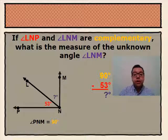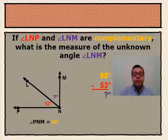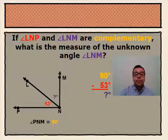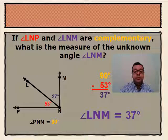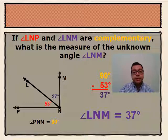So we have our 90 degrees, and we're going to subtract angle LNP, 53 degrees, to get our angle LNM, which is 37 degrees.